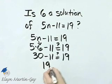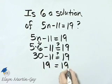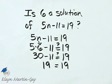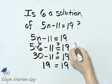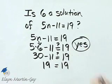So certainly 19 does equal 19. And what does that mean? That means that, yes, 6 is a solution of that equation because a true statement occurred.